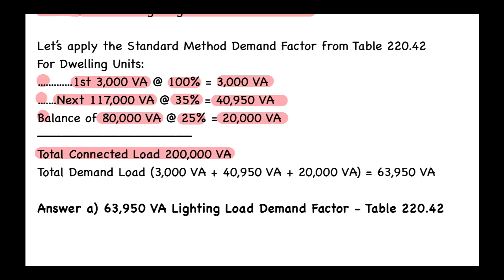It's really important to start with the connected load and apply the first 3,000 VA, then up to 117,000 VA at 35%, and if anything remains, take the balance at 25%. Adding up: 3,000 VA + 40,950 VA + 20,000 VA equals 63,950 VA total demand load. The answer is A — 63,950 VA for the lighting load demand factor from Table 220.42.